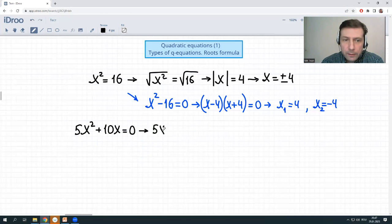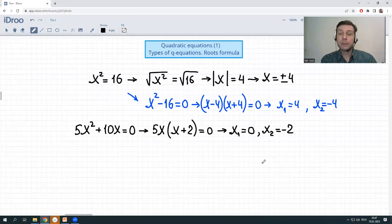So, 5x times x plus 2 is equal to 0 and then again 0 product property, yeah? So, either we have x equal to 0, let's say x1, x sub 1, or with x sub 2, which is equal to negative 2, the whole expression is also equal to 0, left-hand side, I mean, is also equal to 0. We've solved it.